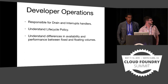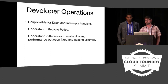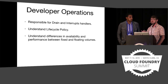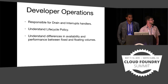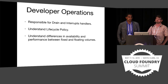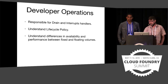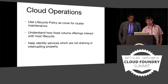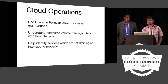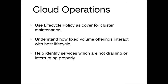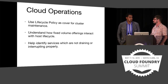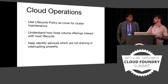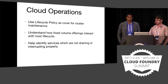The developer needs to know the lifecycle policy so they can ensure their application will be tolerant to whatever cloud operations might be doing to it. If your application can handle two instances draining at a time, then when cloud ops is rolling the cluster, they understand they can shut off at most two cells at a time. As a developer, you also need to understand the differences in availability and performance between fixed and floating volumes — fixed volumes are much more performant because they're local and don't do replication, while floating volumes are more available but have slower throughput.